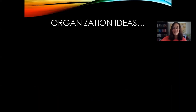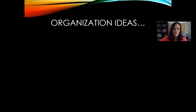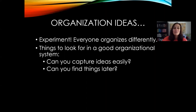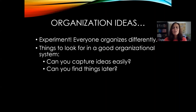Step four: get organized. Different people prefer different methods of organization — there's not one right way of doing this. The most important thing is to find something that works for you personally, so experiment. There are two key things to look for in a good organizational system: Can you capture ideas easily? If you're reading an article, can you capture the central point concisely without being pulled away from the article for a long time? And secondly, can you find things later? If your system doesn't do these two things, it's not a good system.